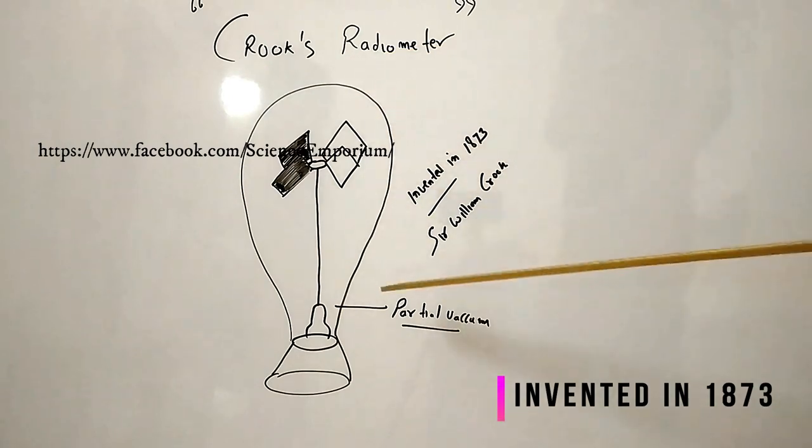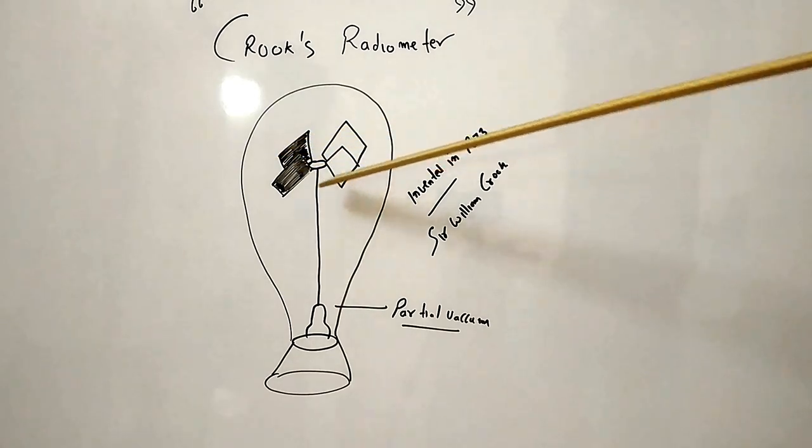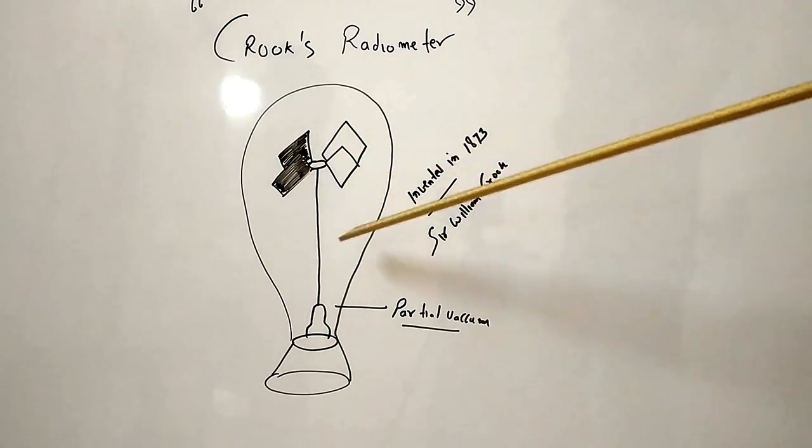There is a glass bulb that is called partial vacuum. We have two sides, one black and one silver and white painted.